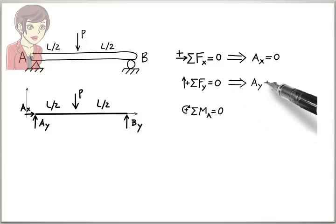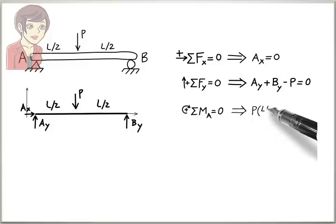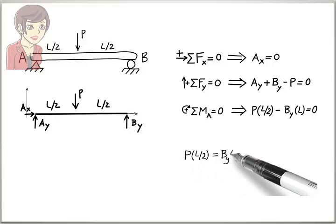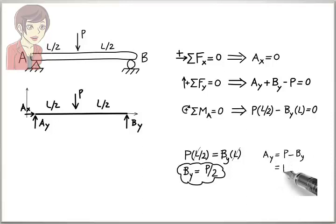The second equation gives us Ay plus By minus P equals zero. Third equation gives us P times L divided by 2 minus By times L equals zero. Solving the third equation for By gives us By equals P divided by 2. Solving the second equation for Ay gives Ay equals P divided by 2.